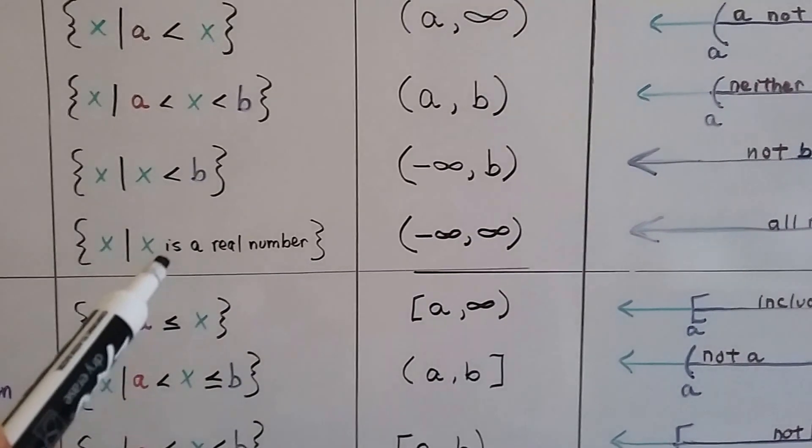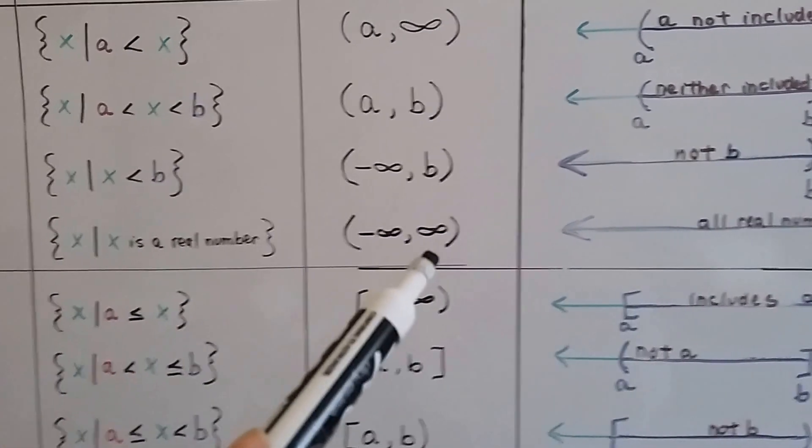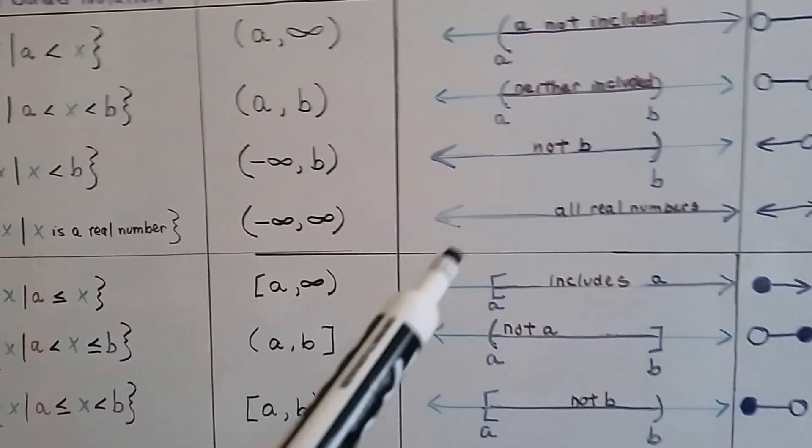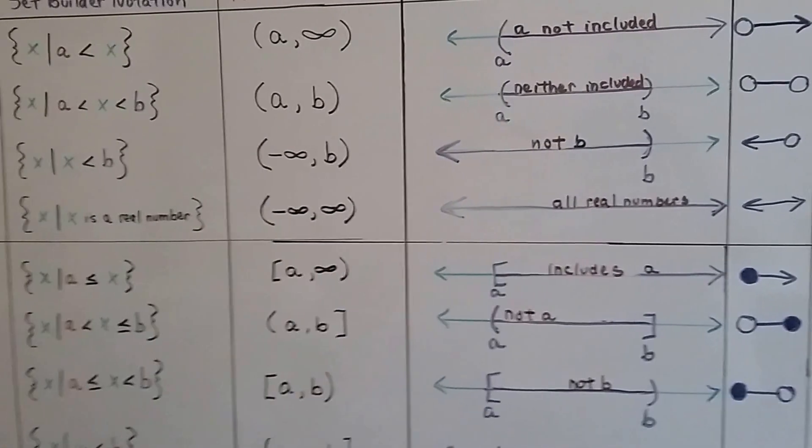If all the real numbers are the solution, then we just put negative infinity, positive infinity with parentheses on each side, and our number line goes on forever in both directions.